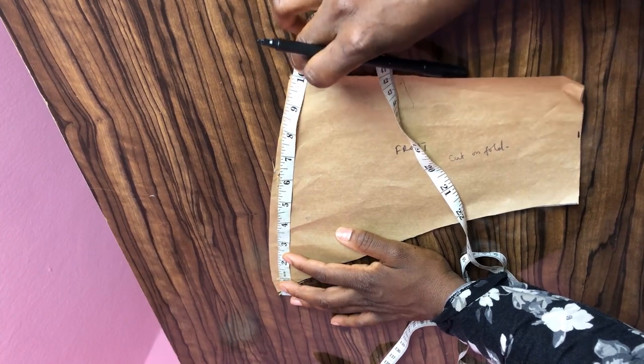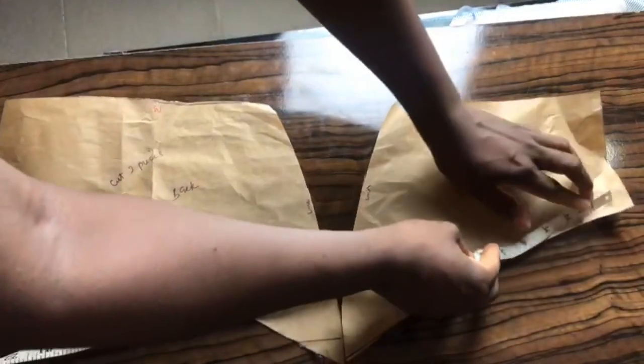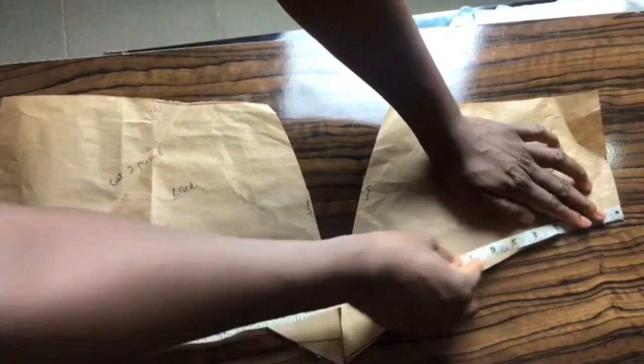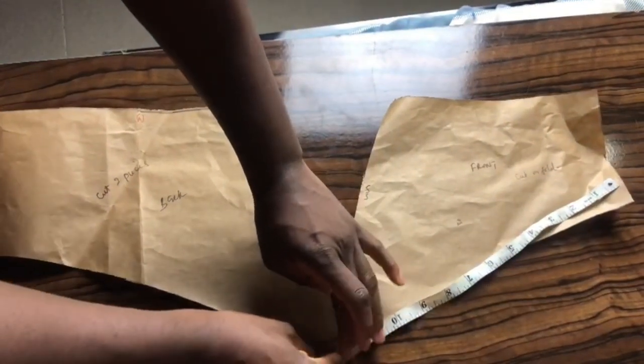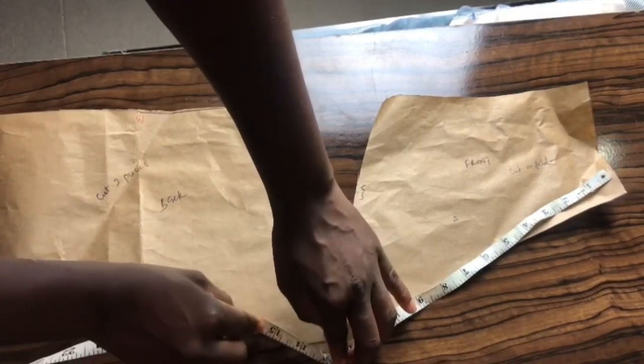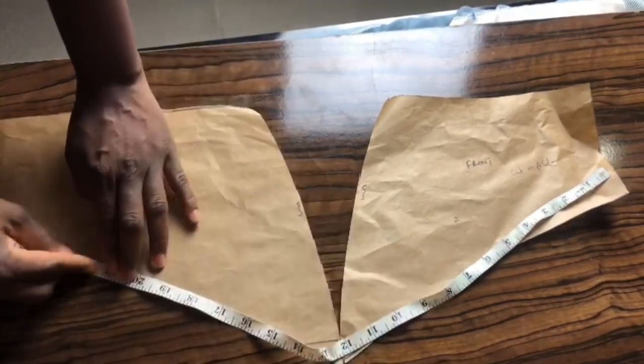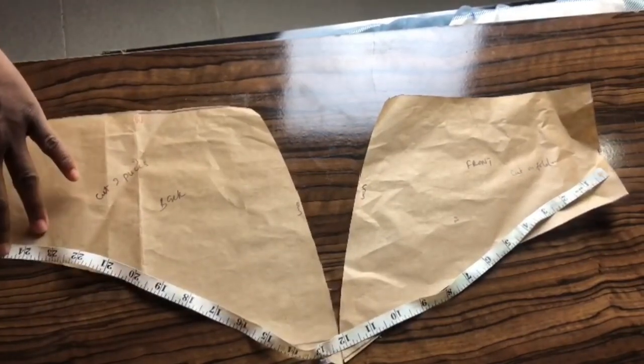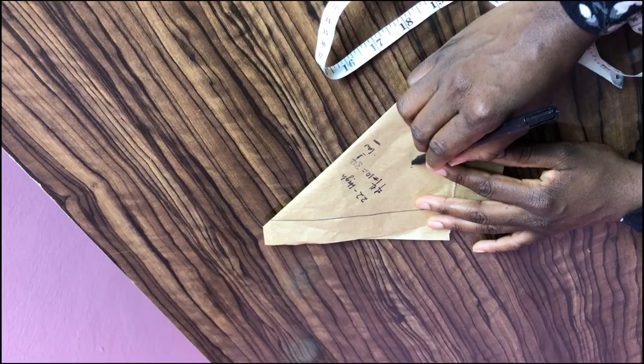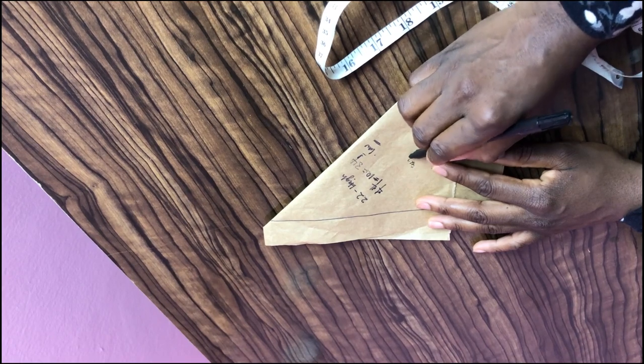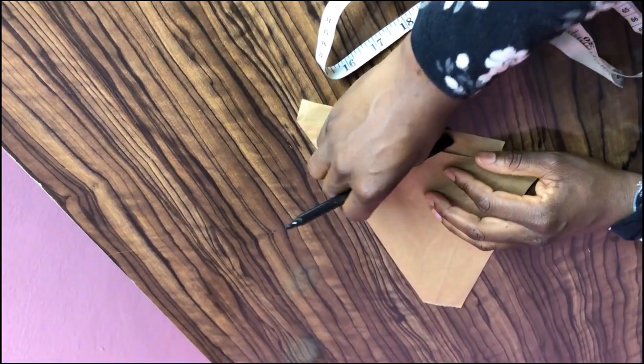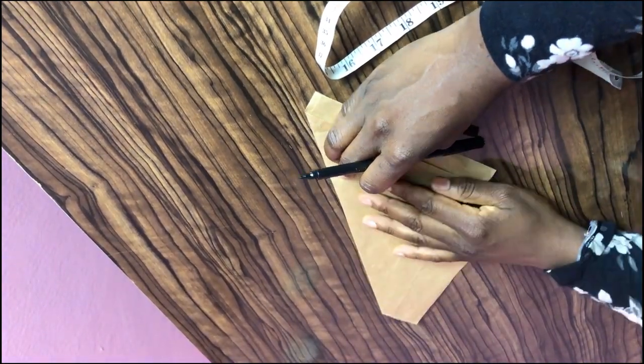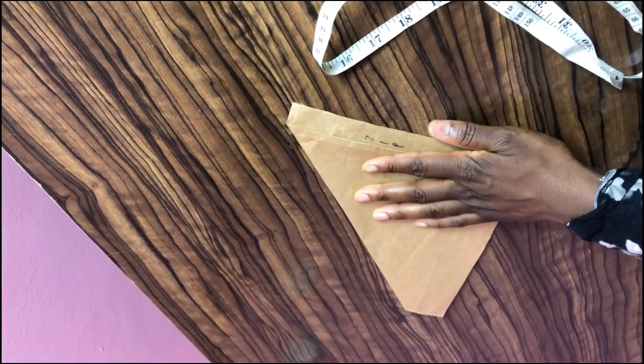Let's calculate the radius of the flay that we will be gathering. First measure this part of your skirt pattern. Bear in mind that this is just half of your skirt, so multiply whatever you measured by 2. Here I have 26, 26 times 2 equals 52. Now we need to increase this figure in order for us to have something to gather. So you can multiply by 2 or 2.5 or 3, depending on the amount of fabric you have. So 52 times 2 is 104.